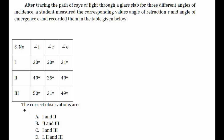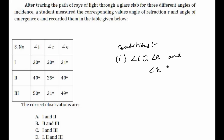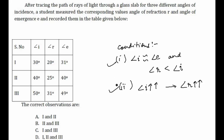The question asks which observations are correct. For a light ray passing through a glass slab, two conditions should hold true: first, the angle of incidence should be approximately equal to the angle of emergence, and the angle of refraction should be less than the angle of incidence. Second, as the angle of incidence increases, the angle of refraction also increases.